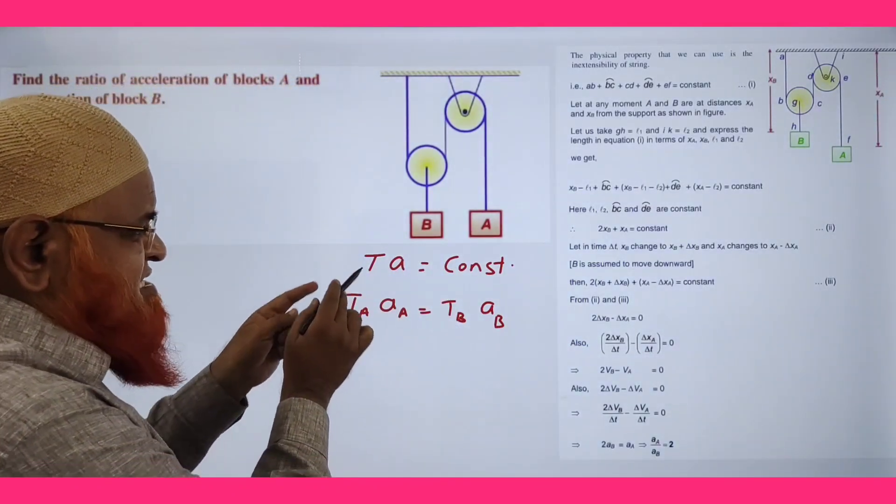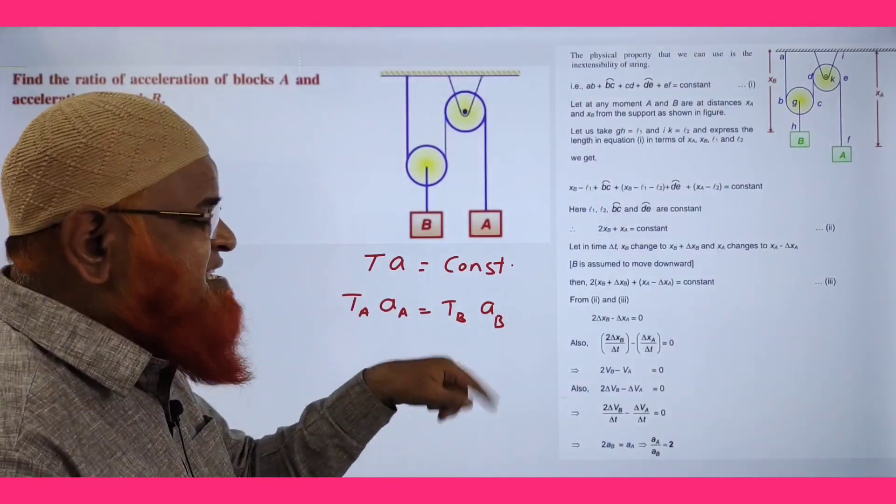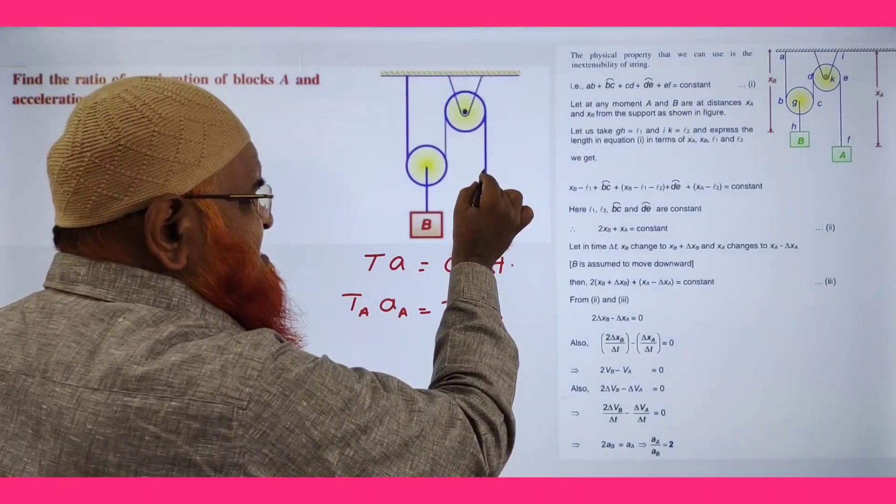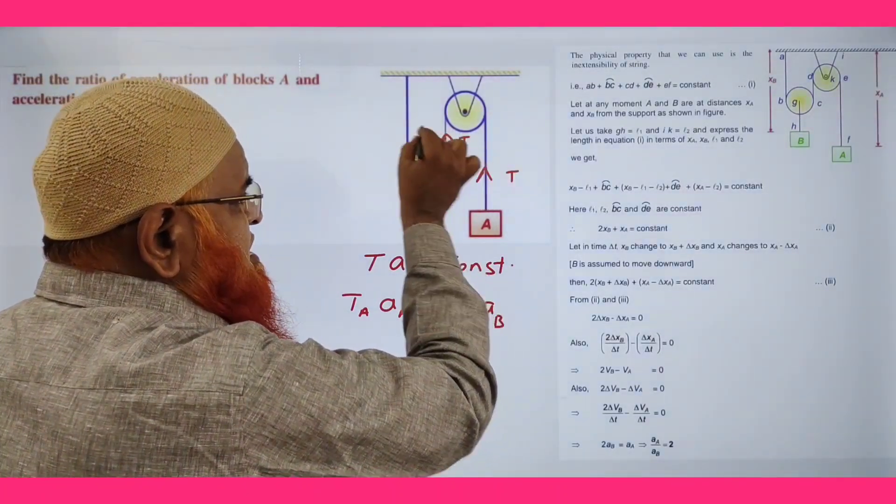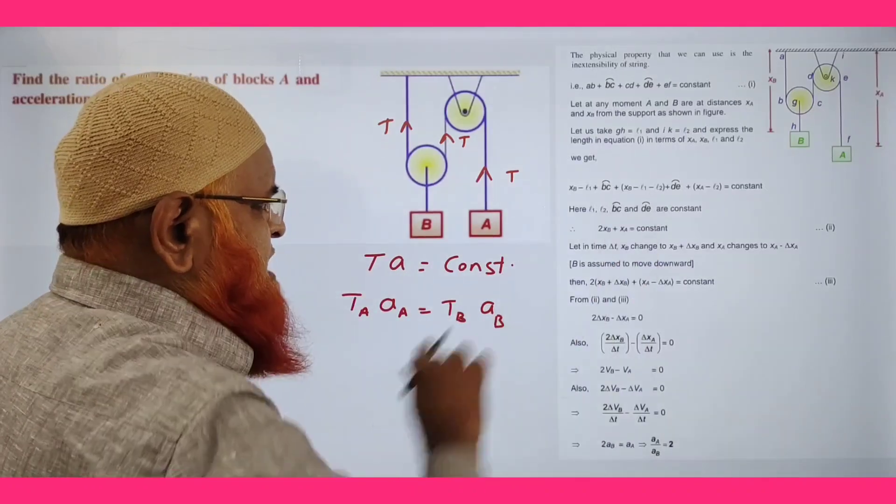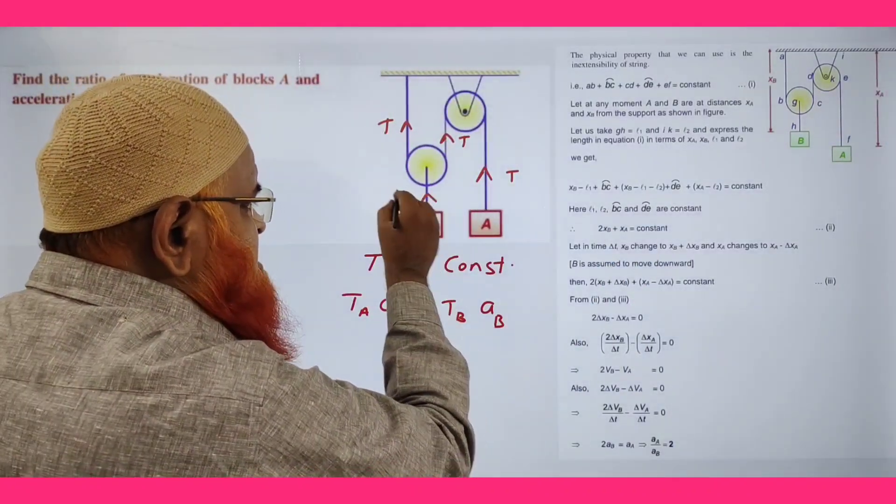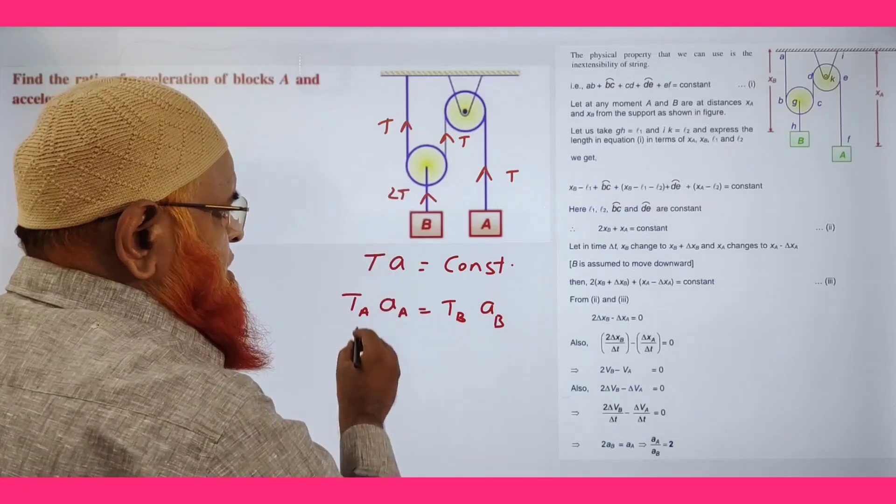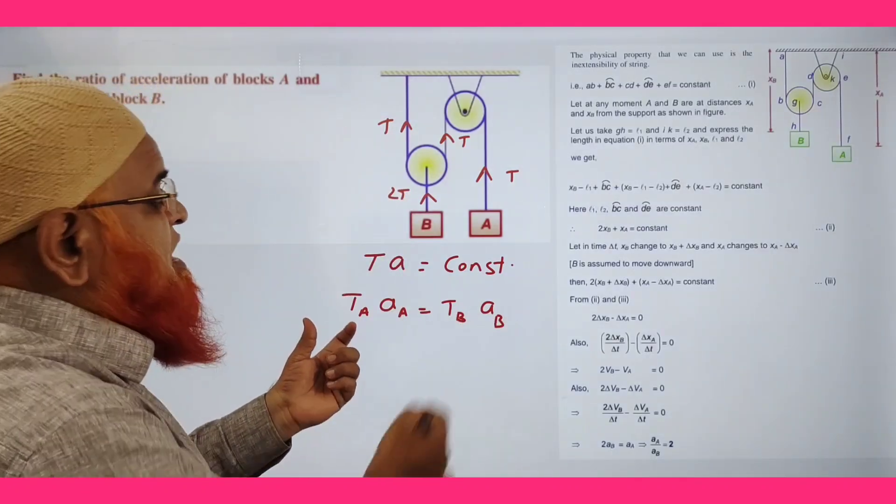Now, a simple logic is tension times acceleration is going to be constant. So TA times AA is equal to TB times AB. You can just see here tension is T, single thread here, here also tension is T, here also tension is T. Because this is a single rope, tension is going to be same. But these two tensions combined together, here tension is taken as 2T. So here TA times AA is equal to TB times AB.